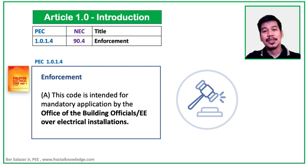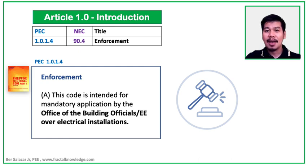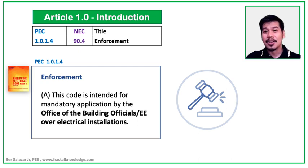Moving on to Section 1.0-1.4, Enforcement. Our code states that the building official and their office is the enforcer of the code. They have all the power to make sure all buildings covered by the Philippine Electrical Code shall mandatorily comply with the code. OVO engineers exercise the integrity of the profession to implement the code.